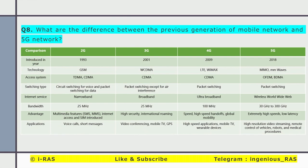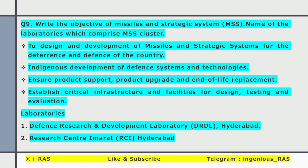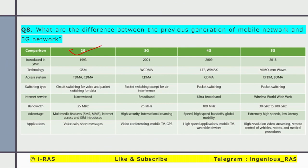What are the differences between previous generations of mobile networks and 5G? The generation started from 1G, which used analog signals and was meant only for voice calls. Problems included dropped calls, poor quality, and low battery life. Then came 2G, introduced in the 90s, which worked on GSM, was narrowband with bandwidth around 25–50 MHz. It provided SMS, multimedia features, and most importantly introduced the internet, along with voice calls and short messages. Then came 3G.